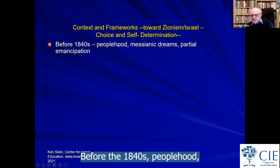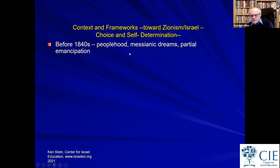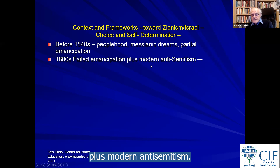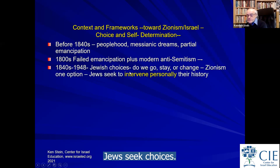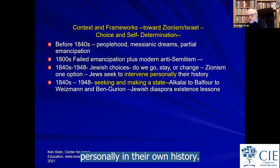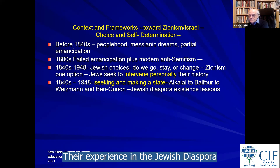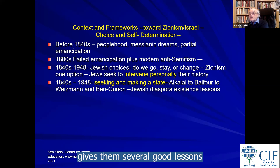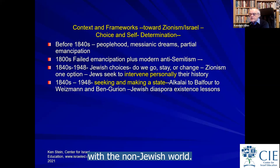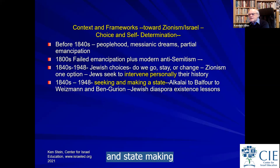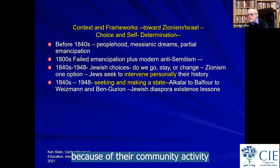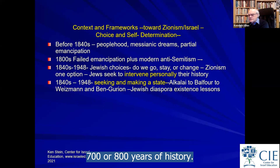Before the 1840s: peoplehood, messianic dreams, partial emancipation. Then failed emancipation plus modern anti-Semitism — Jews seek choices. They intervene personally in their own history. They seek and make a state between the 1840s and the 1940s. Their experience in the Jewish diaspora gives them several good lessons on how to manage themselves as a community and how to manage their relationship with the non-Jewish world. Jews were essentially experienced in state building because of their community activity and survival over the previous seven or eight hundred years.